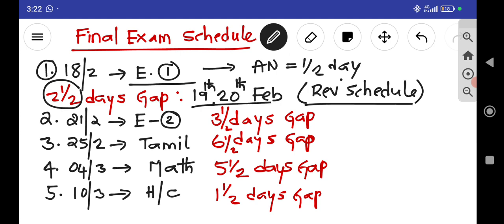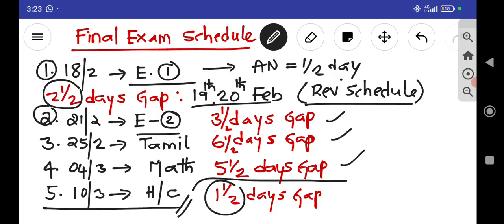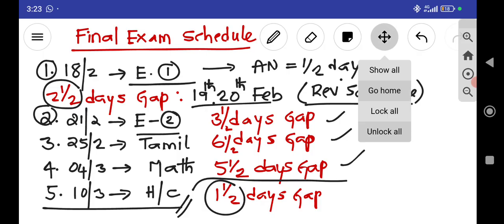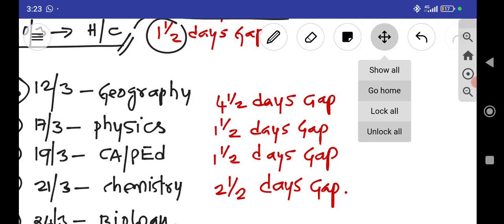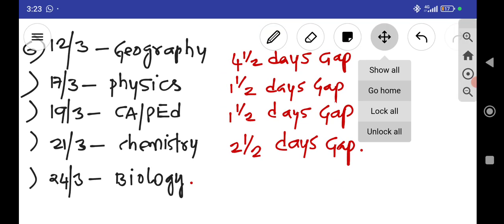You can have a revision schedule as we have done for second 50%. Now second exam English 2, you have enough gap here for all this, till history and civics you have this gap. Now if you come to the next slot, that is 6th exam, there is only one and a half days gap for geography, so you have to prepare it properly.